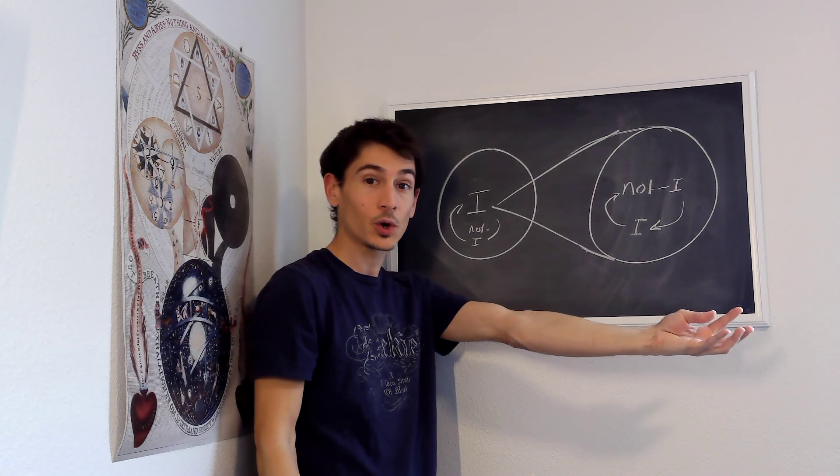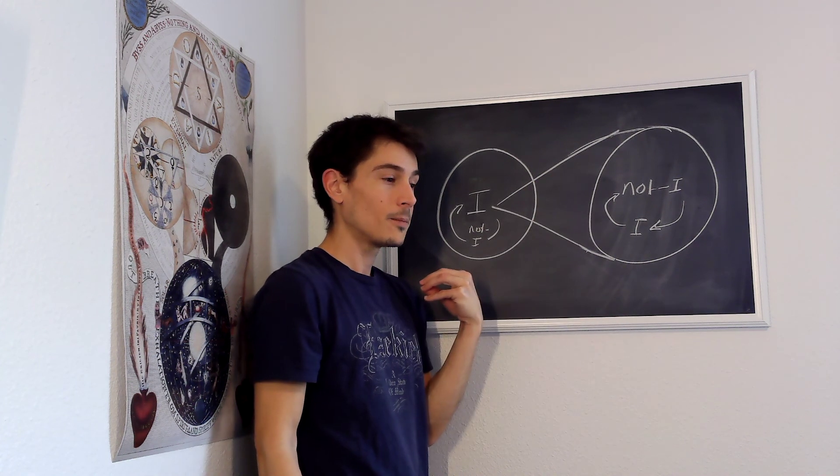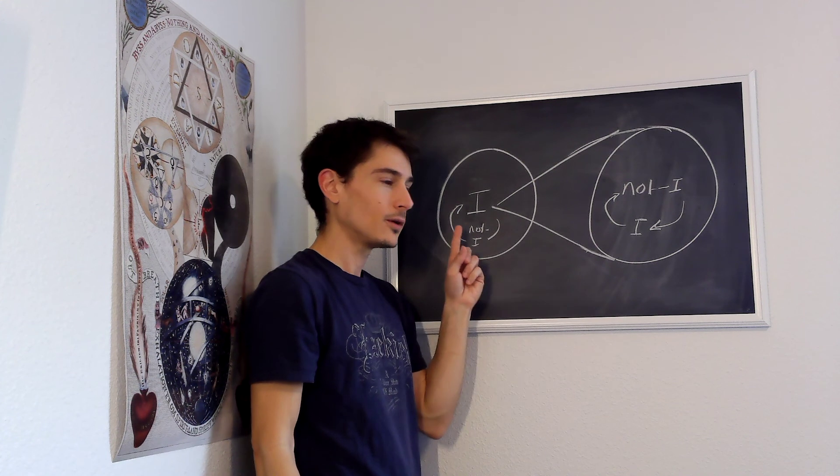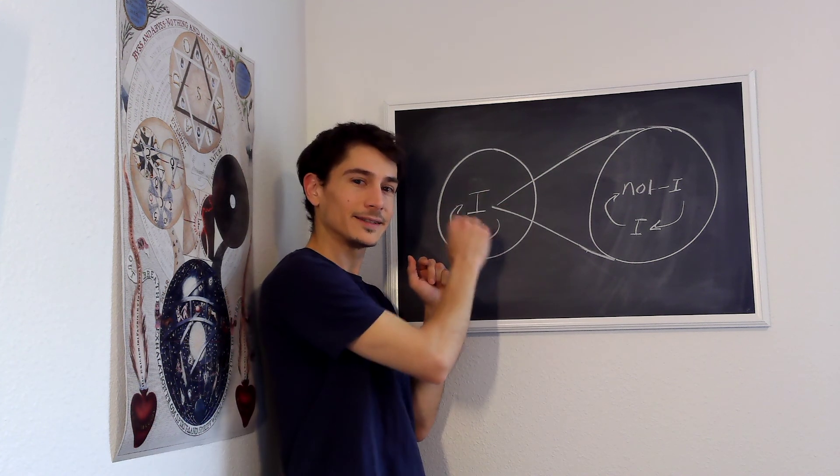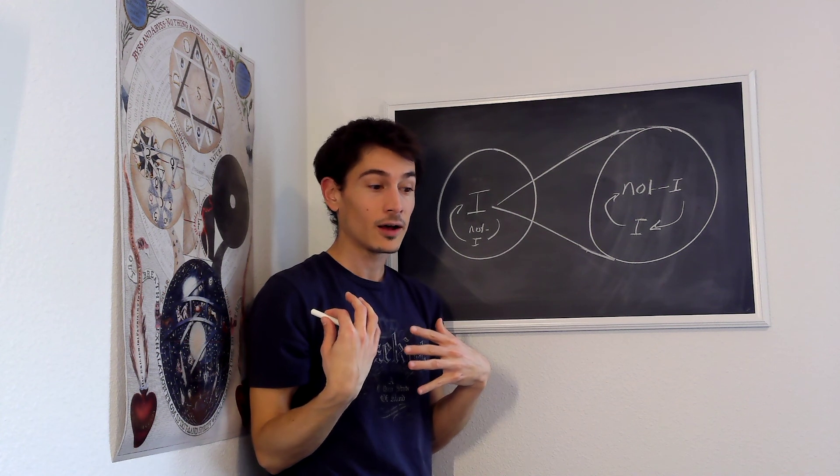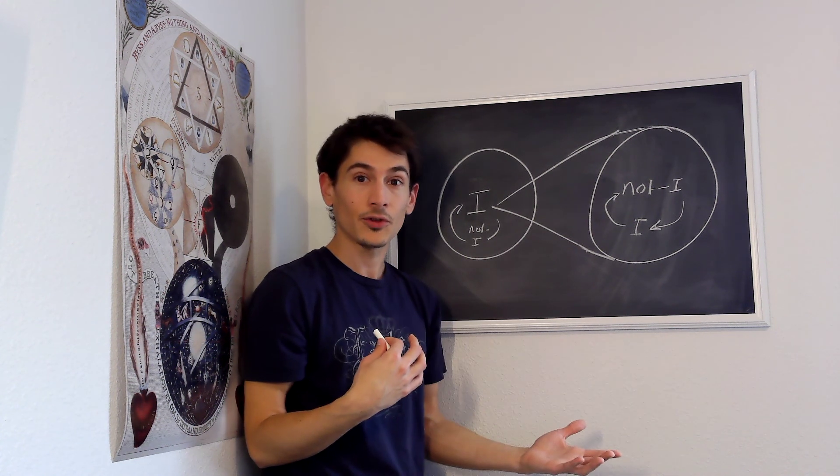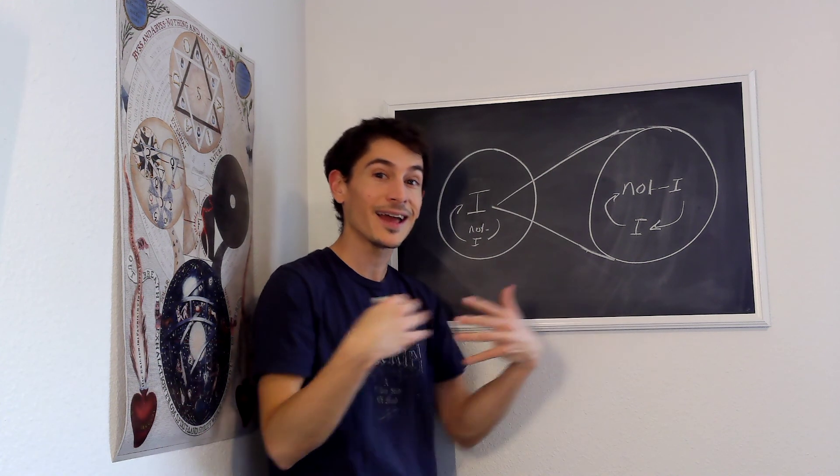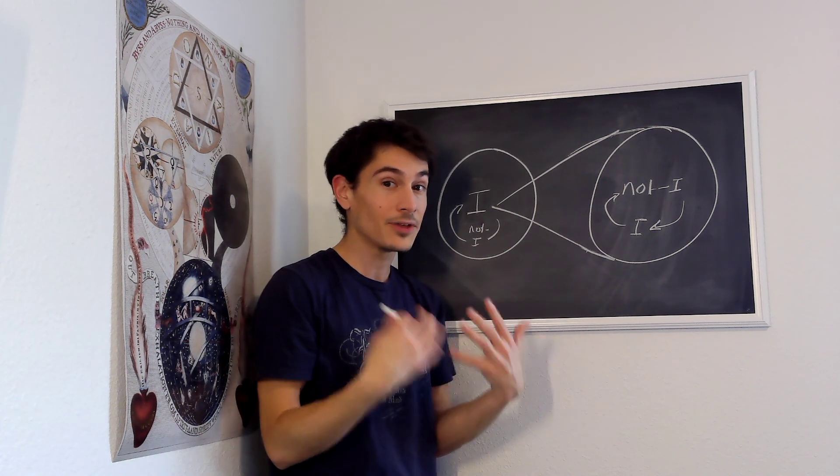Fichte says there's an original act by which we constitute not only the entire phenomenal world but also the categories by which we would understand that world. Whereas for Kant we had these categories that he basically lifts from Aristotle who wrote them down 2,000 years earlier, Fichte says we need to show how these categories are generated by free acts of the absolute ego.